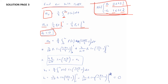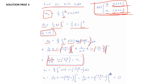Now we do the same for aₙ. Starting with aₙ = (2/4)∫[0 to 2] p(t)·cos(2nπ/4 · t)dt and performing the integration, we get (2/nπ)·p-naught·sin(2πn/4 · t) evaluated from 0 to 1, plus (2/nπ)·p-naught·sin(2πn/4 · t) evaluated from 1 to 2. After simplification, aₙ = (4p-naught)/(nπ) · sin(nπ/2).